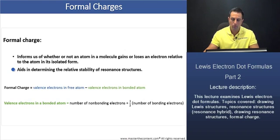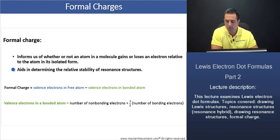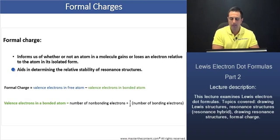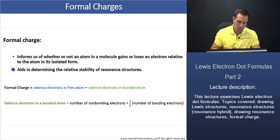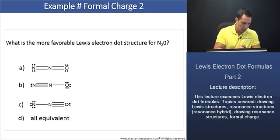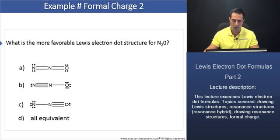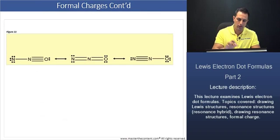Formal charge aids in determining the relative stability of resonance structures. Let's do an example to explain what that means. We're being asked: what is the more favorable Lewis electron dot structure for nitrous oxide? Is it A, B, C, or D? Let's explain this on the next slide.